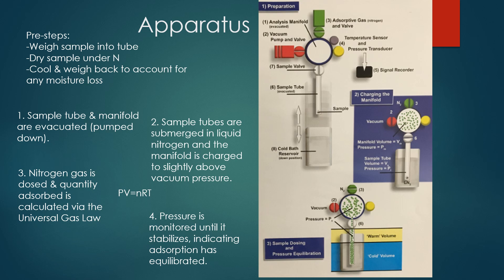We input that new sample weight into the computer program and put the sample tube into the manifold. Then the tube and manifold are evacuated. The sample tubes are submerged in liquid nitrogen - this has to do with keeping conditions at ideal temperature. Then the instrument doses with nitrogen gas and the quantity that's adsorbed is calculated via the universal gas law. It monitors the pressure until it's stabilized, which indicates adsorption has equilibrated, and the analysis can then go in reverse.